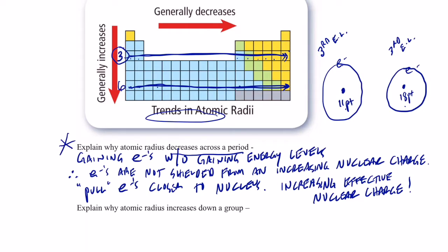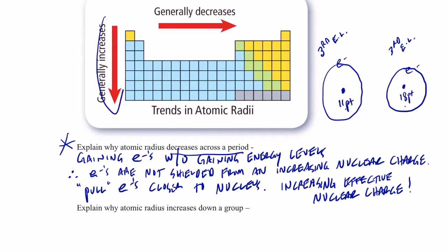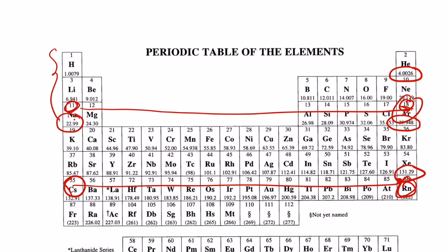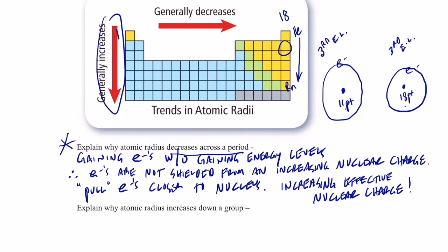Now, why does the atomic radius increase when we go down a group? When we go down group 18, helium has one energy level. Then neon has two, argon three, krypton four, xenon five, radon six energy levels. When you go down a group, the energy level is increasing, and therefore we have an increase in radius — the electrons get farther away from the nucleus every time you gain a principal energy level.